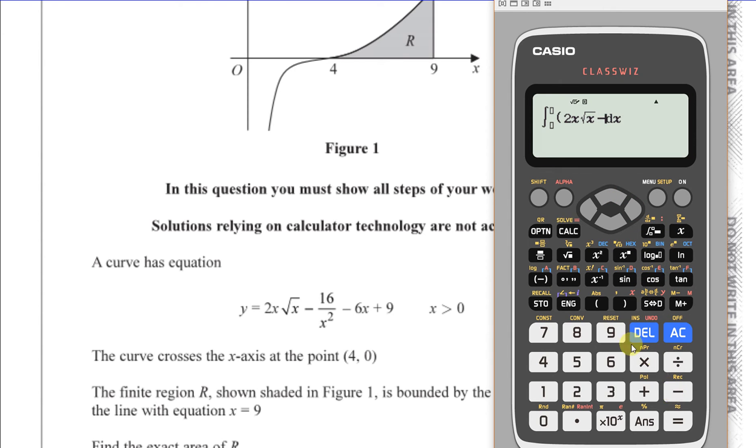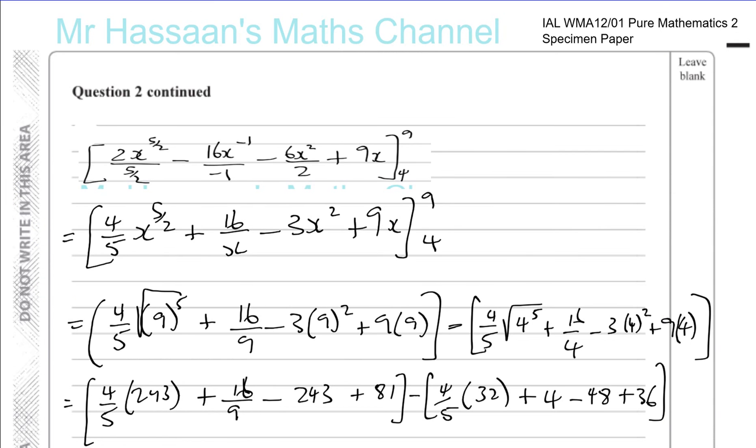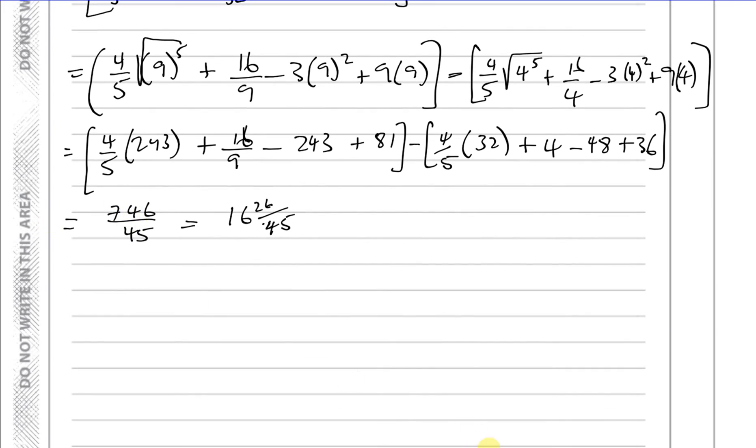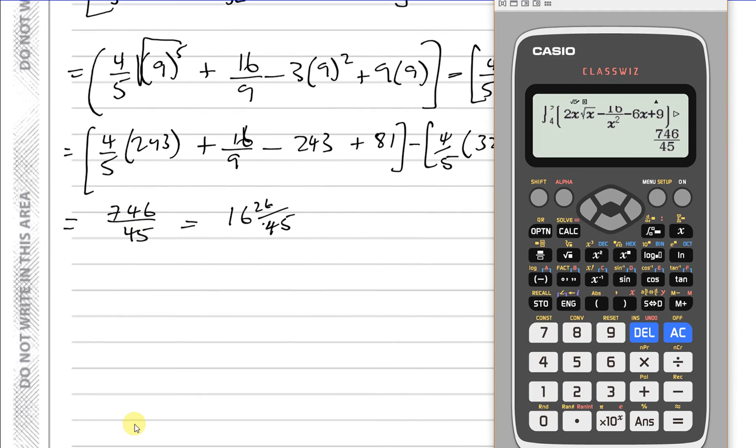And I'll write this function in here. So I'll put 2x times root x minus 16 over x squared and then I'll put minus 6x plus 9, close that bracket. And then I'll put the limits 4 and 9. I'll press equals. I get 746 over 45.